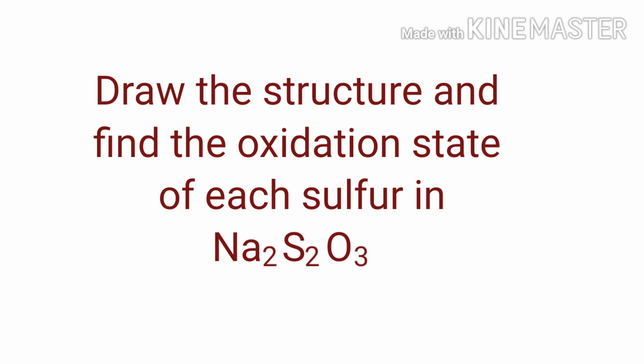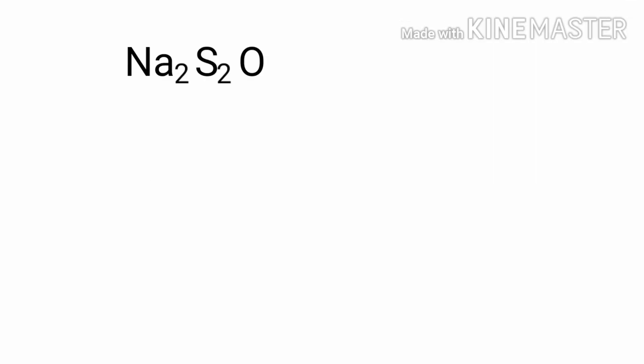Draw the structure and find the oxidation number of each sulfur in sodium thiosulfate. Sodium thiosulfate is a neutral compound with overall oxidation number zero. Therefore, we know that the sum of the oxidation numbers of the atoms is equal to zero.